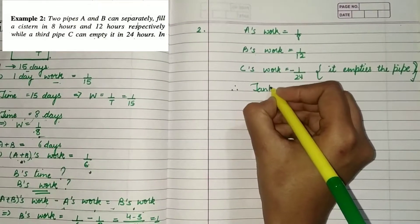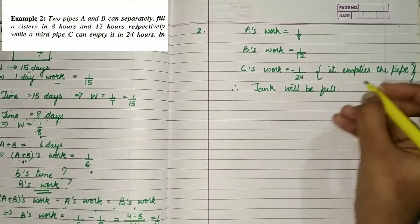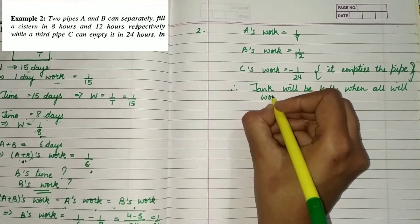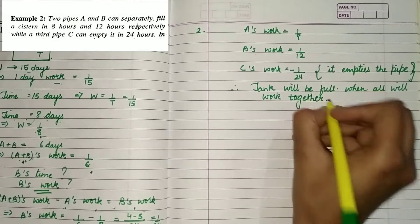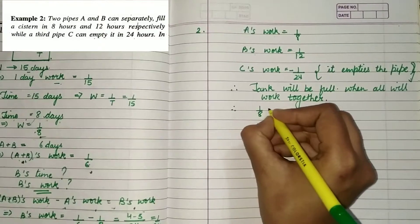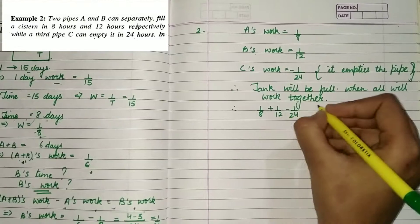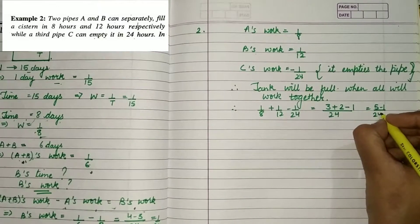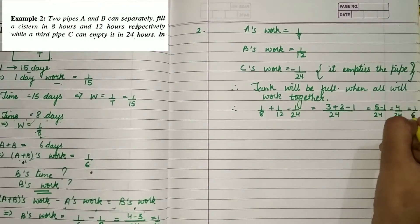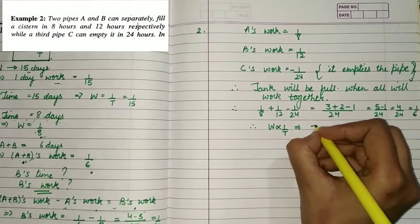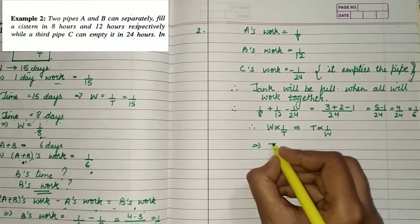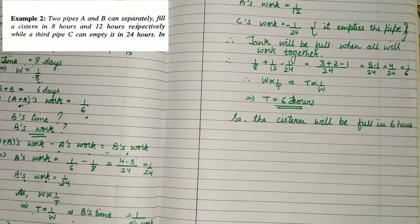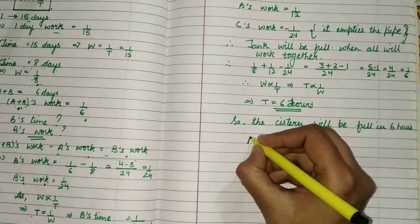If all three pipes are opened together, how long will it take to fill the cistern? We add the work of A, B, and C together. Since C is an outlet pipe, C's work is negative. After adding them, the combined work comes to 1 upon 6, which means the cistern will be filled in 6 hours.